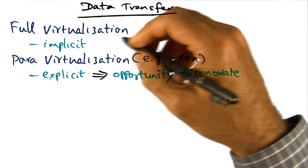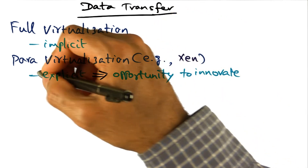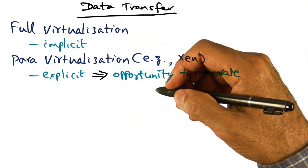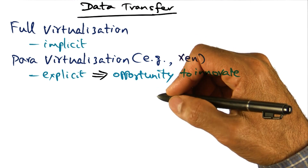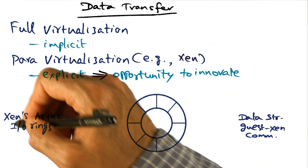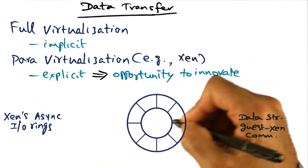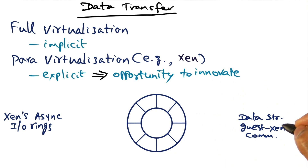In the context of full virtualization, there is very little scope for innovation. But in the context of para-virtualization, there's a lot of scope for innovation in the way memory buffers are handled between the guest operating system and the hypervisor. Specifically looking at Xen as an instance of para-virtualization, let's look at the opportunities for innovation in the guest OS to Xen communication.